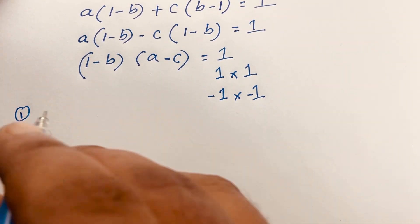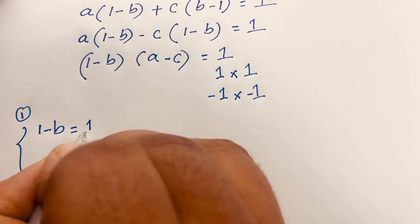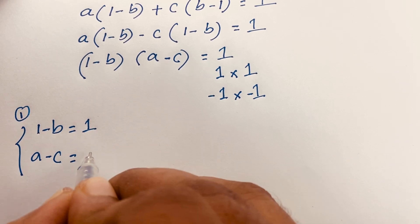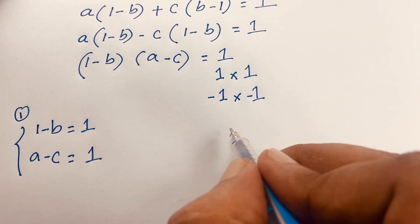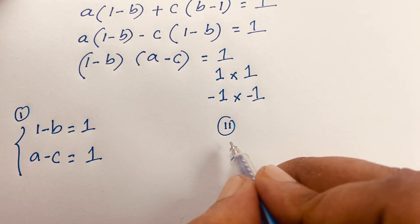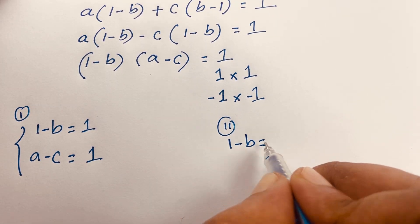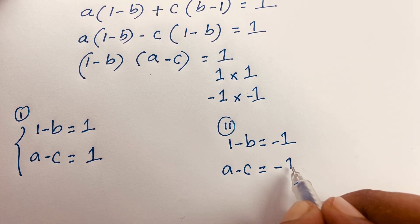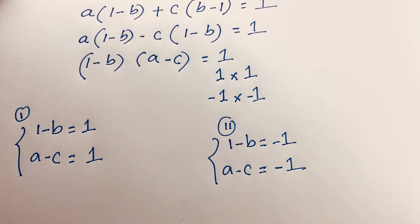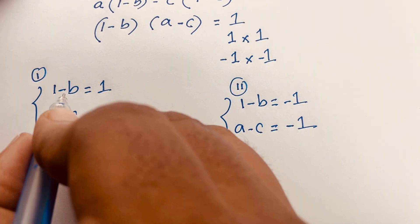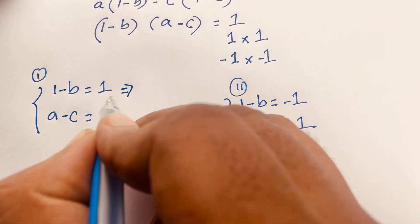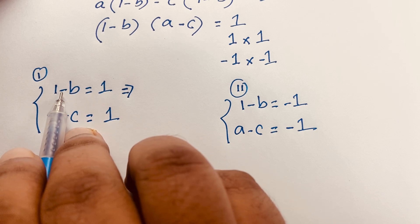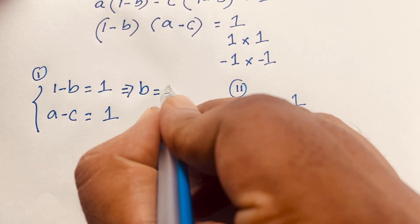In case one: 1 - b = 1 and a - c = 1. In case two: 1 - b = -1 and a - c = -1. For case one, from 1 - b = 1, moving 1 to the other side gives b = 0.